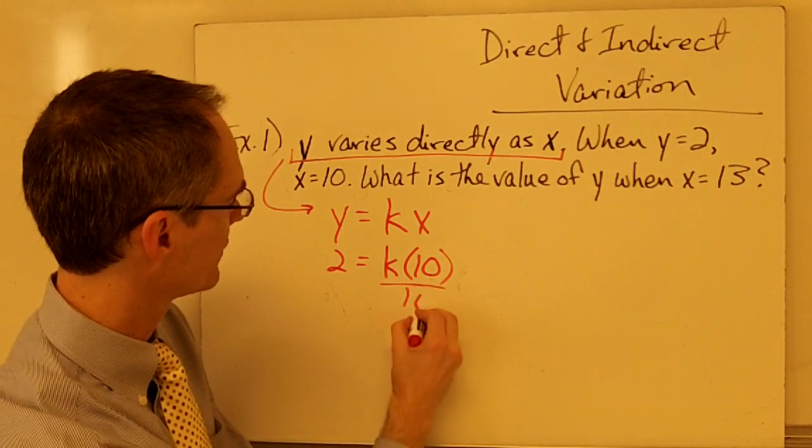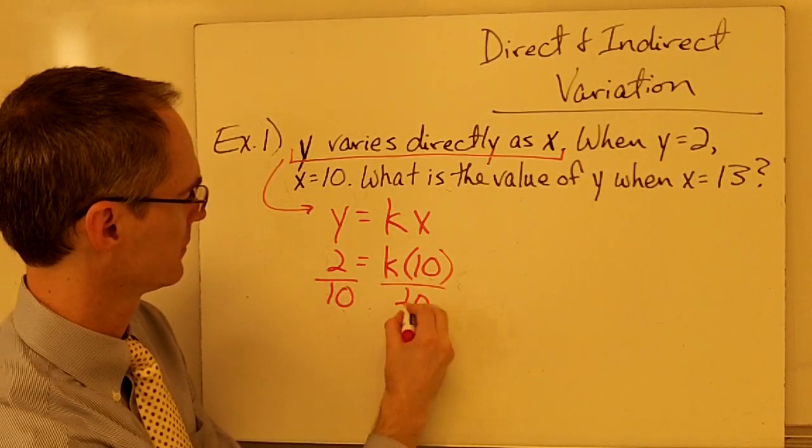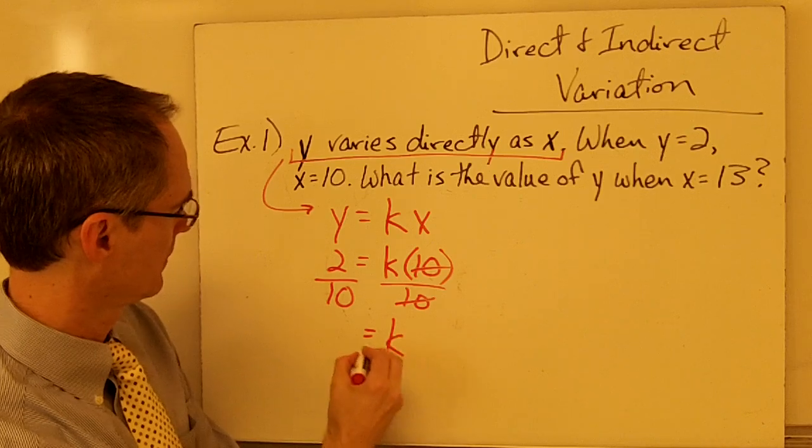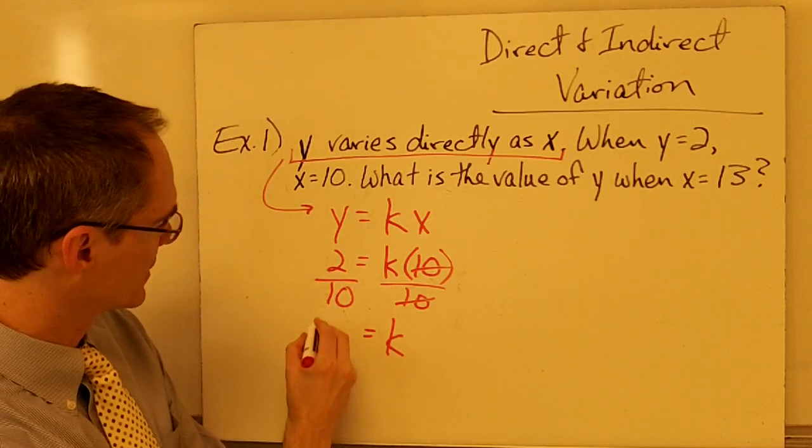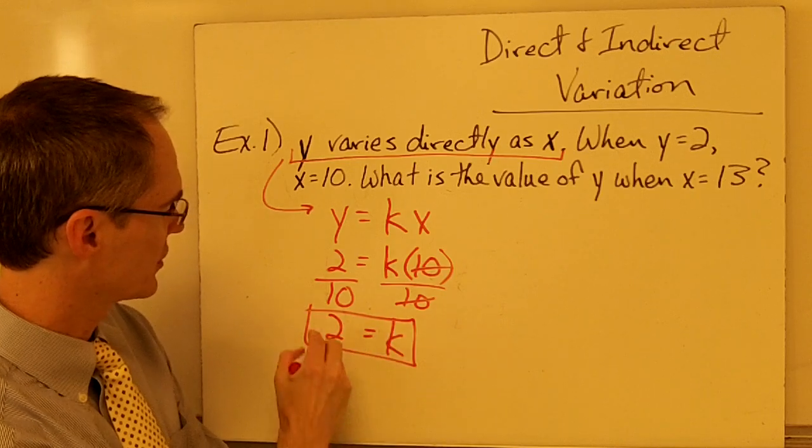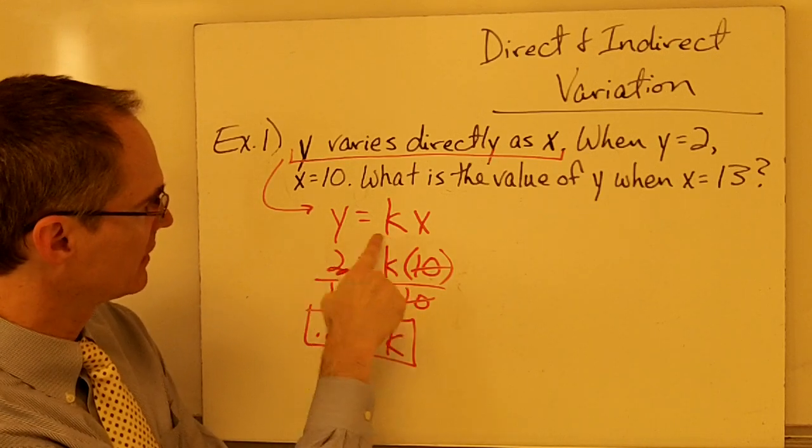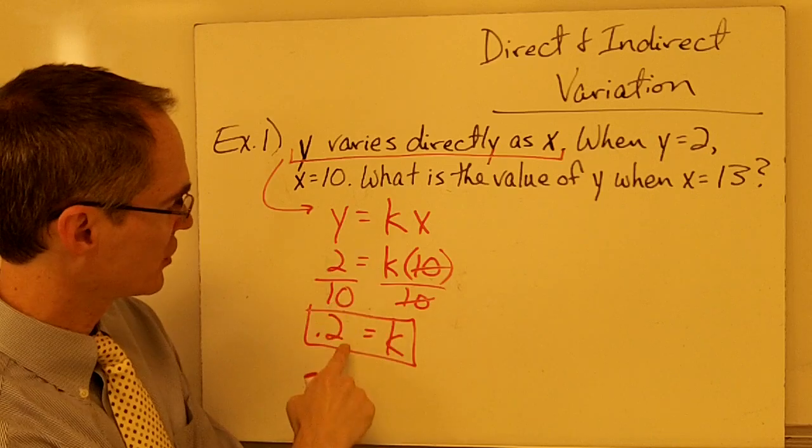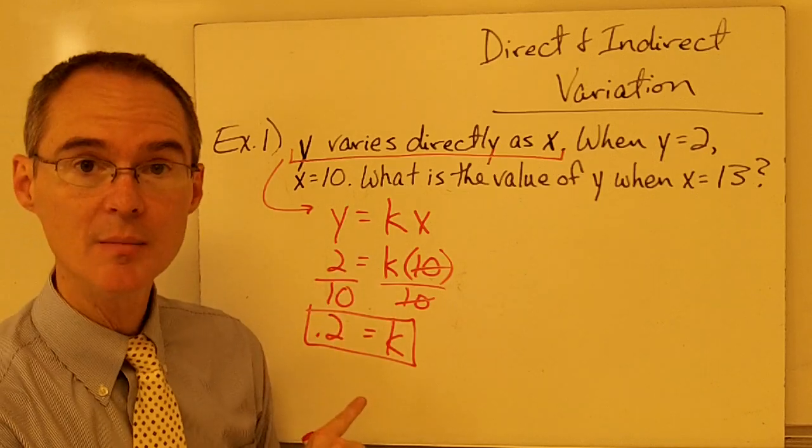And now I can solve this equation for my value of k. So if I divide both sides of this equation by 10, then I can determine, I'm just going to write this in decimal, 2 divided by 10 is 0.2.